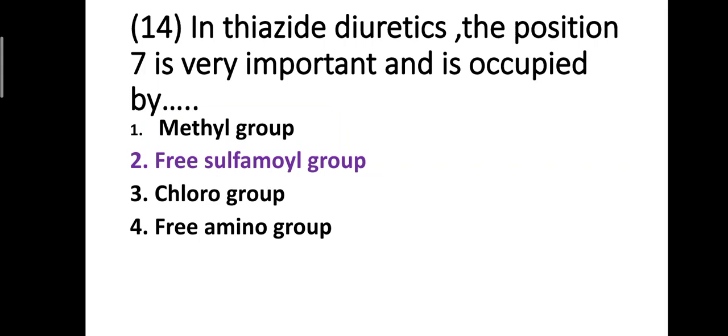Question number fourteen: in thiazide diuretics, position seven is very important and is occupied by which group? Option one: methyl group, option two: free sulfonamide group, option three: chloro group, option four: primary amino group. The correct answer is option two — free sulfonamide group.